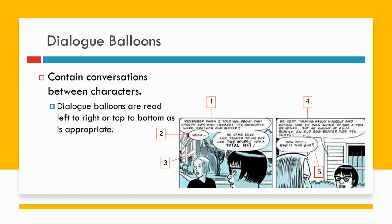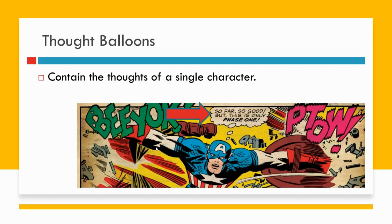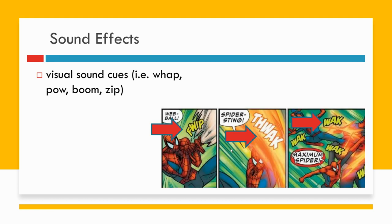Graphic novels contain conversations between characters, and they will take place in dialogue balloons, which are read left to right or top to bottom as well. We can see the order that they would go through here. Now we have thought balloons, and they contain the thoughts of a single character. They'll normally have little dots to show that the character is thinking instead of speaking — it's coming from their brain, not their mouth. And you'll see sound effects: visual clues like whap, pow, boom, sip, whack — things like that. They sound like what they are.